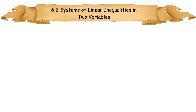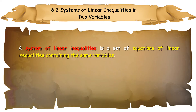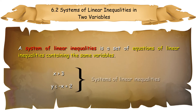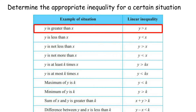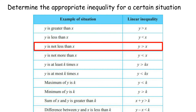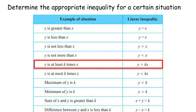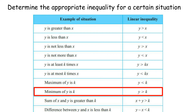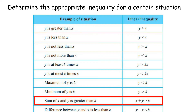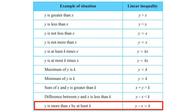6.2 Systems of Linear Inequalities in Two Variables. A system of linear inequalities is a set of linear inequalities containing the same variables. Determine the appropriate inequality for a certain situation: y is greater than x; y is less than x; y is not less than x; y is not more than x; y is at least k times x; y is at most k times x; maximum of y is k; minimum of y is k; sum of x and y is greater than k; difference between y and x is less than k; y is more than x by at least k.